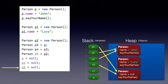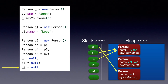Similarly, in the next line, we have p2, and the link between p2 and that person whose name we didn't assign disappears. So now we have three objects, and two of them can be referenced from a variable — person John can be referenced from p3 or p4.